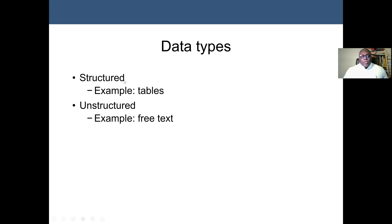We have structured data — an example can be tables — and also unstructured data, which can be free text. Structured data is the most important data type for us, as we will be using it for most exercises in our course. We are going to focus more on data from Excel or CSV, that is Comma Separated Values text files. We have already seen it in previous lectures when we discussed the height and weight data sets, where we were trying to find the relationship between a person's weight and their height. This is structured data because it is organized in table form.